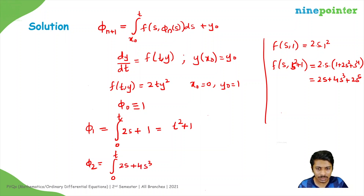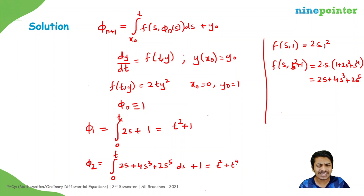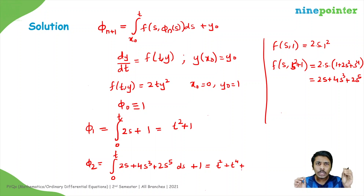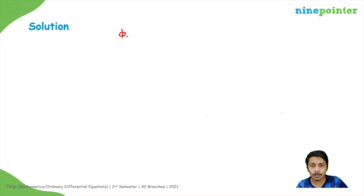Substituting and integrating: the integral of 2s is t², the integral of 4s³ is t⁴, and the integral of 2s⁵ is 2s⁶/6 = s⁶/3, giving t⁶/3 after applying limits. Adding the constant 1, we get φ₂ = 1 + t² + t⁴ + t⁶/3.